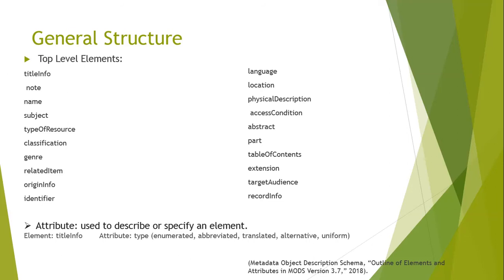MODS consists of many various elements. These elements are updated a lot, but the general structure seems to stay the same. In the newest version, MODS 3.7, there are the top elements listed on the slide. It consists of about 20 elements that represent the broadest bits of data concerning an object. Examples of top-level elements include title info, physical description, abstract, and so on. The names of the elements are pretty self-explanatory, so there's no need to go into detail about each one — what you see is what you get. It's very simple in how you enter the information.